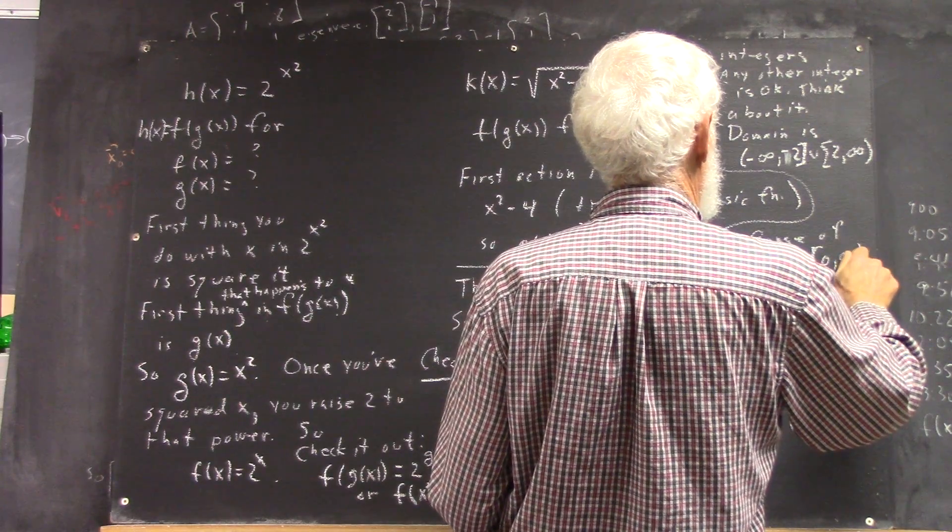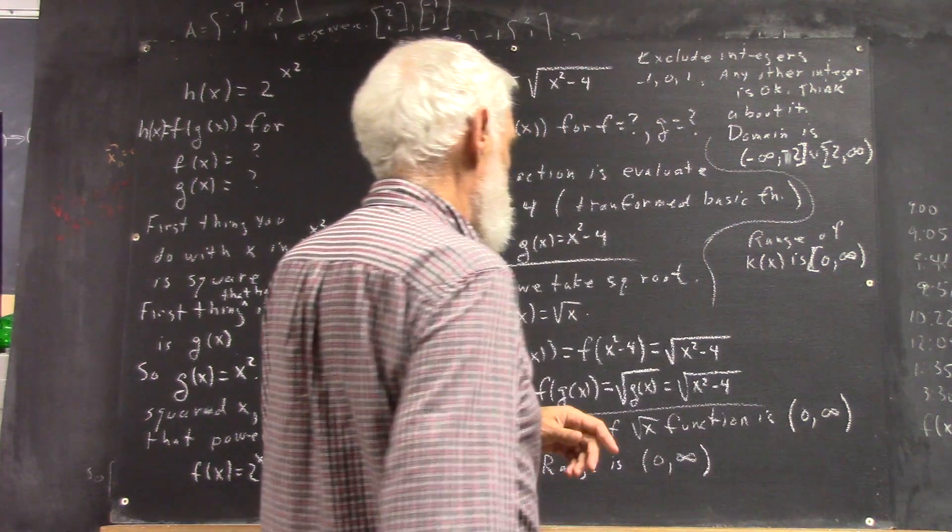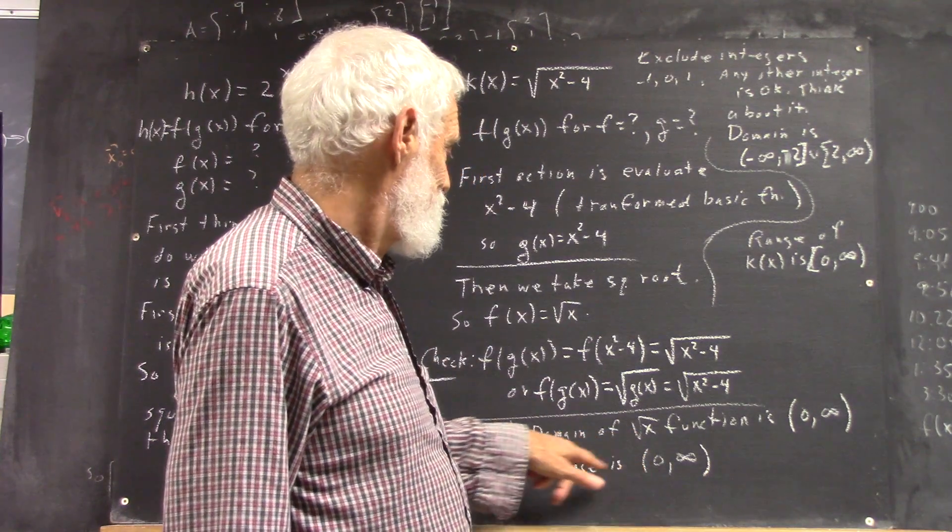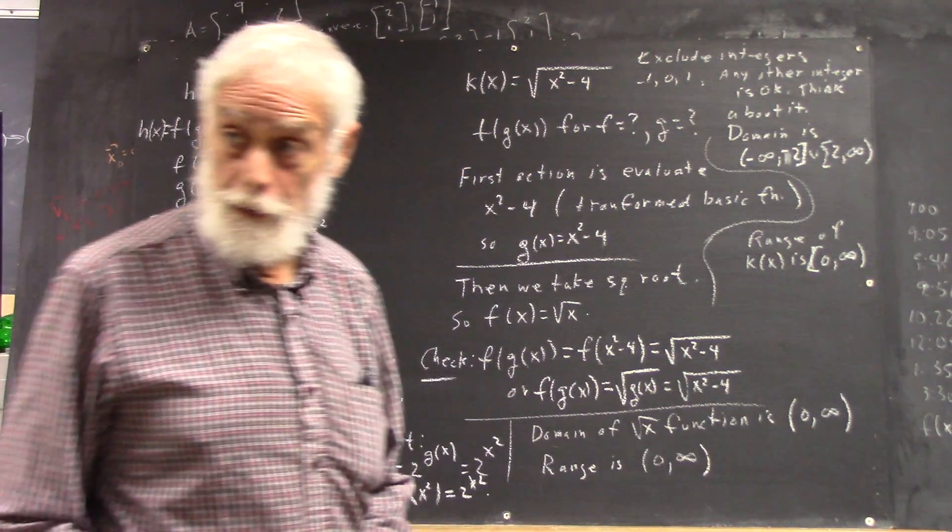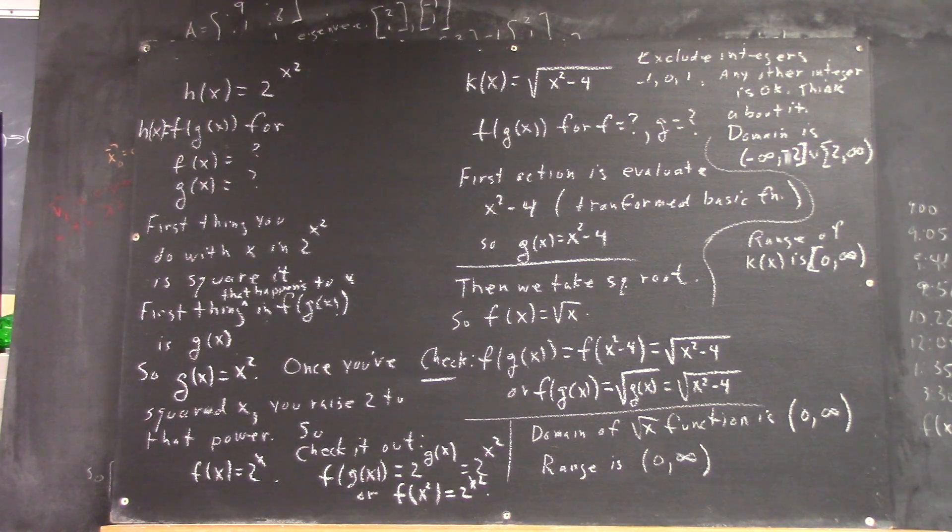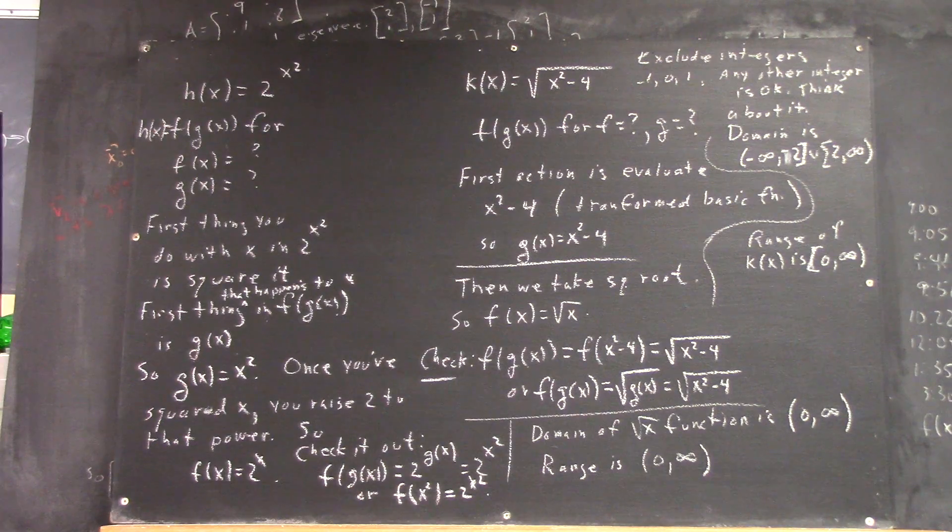The range of k of x is 0 to infinity, because the numbers in your domain give you square roots of everything from 0 on up.